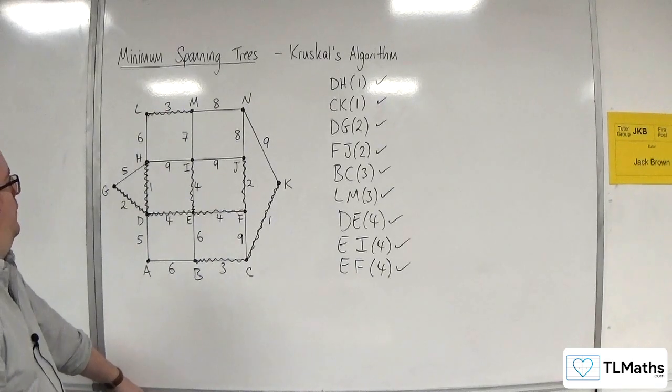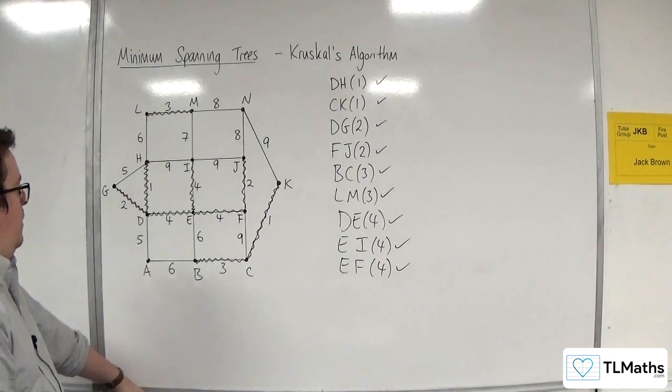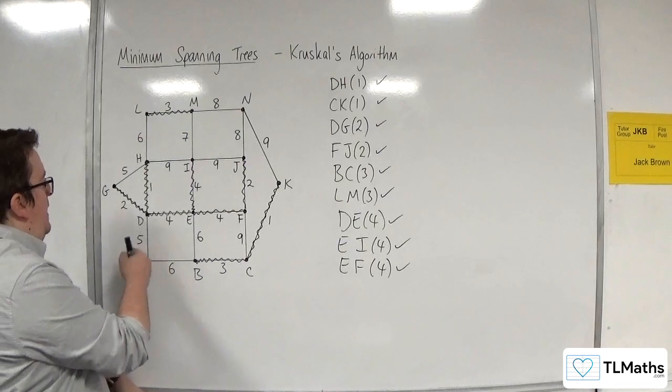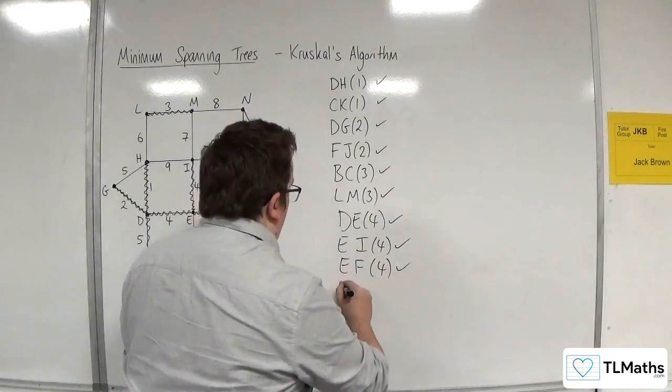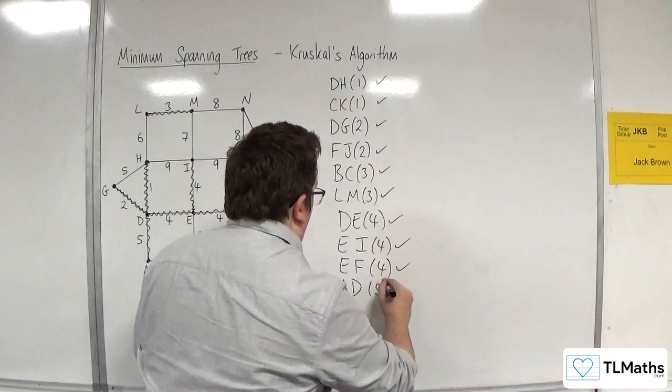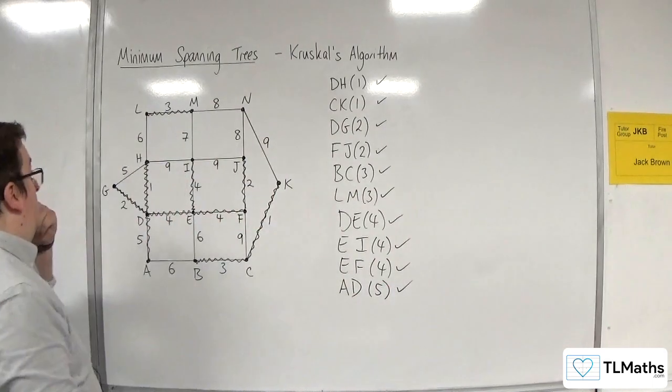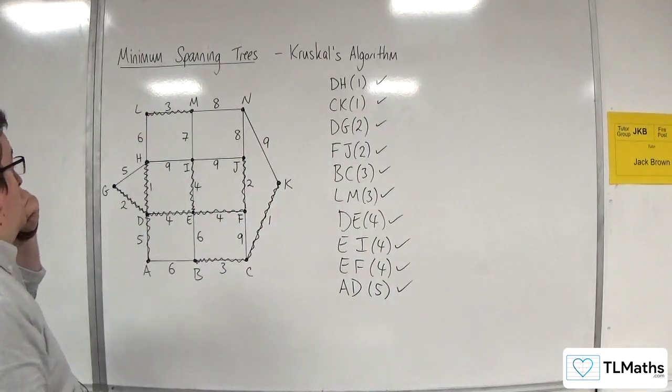Are there any more 4s? I can't see any more 4s. So we're going to go up to 5s now. I can see 1, 5. This one here, AD. That won't cause a cycle. So that's all good.